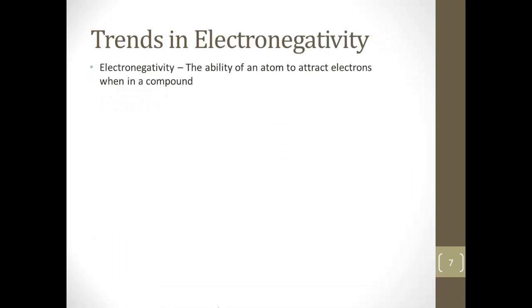Next is electronegativity. Definition: electronegativity is the ability of an atom to attract electrons when in a compound. And really what that means is how electron-hungry it is. Since everybody wants to be like a noble gas, these guys just need an electron or two to be like a noble gas. So they really want electrons. So they're very electronegative. They want an electron. These guys over here need to lose an electron to move back that way and be like a noble gas. So they have a lower electronegativity because they don't want electrons. They actually want to get rid of electrons.